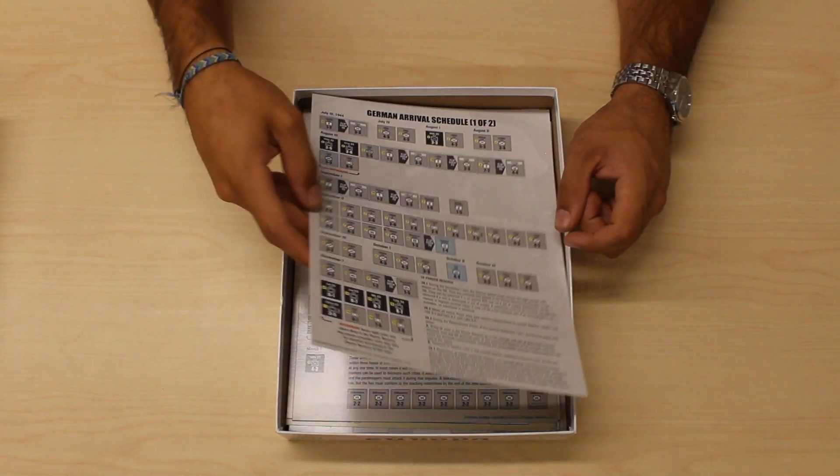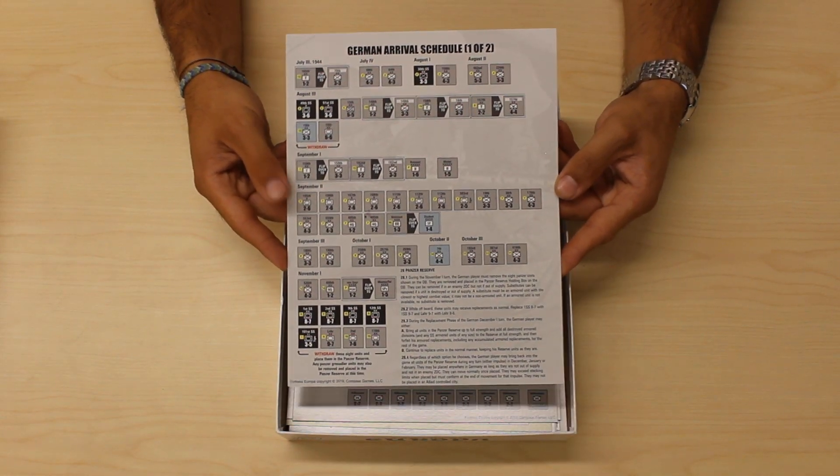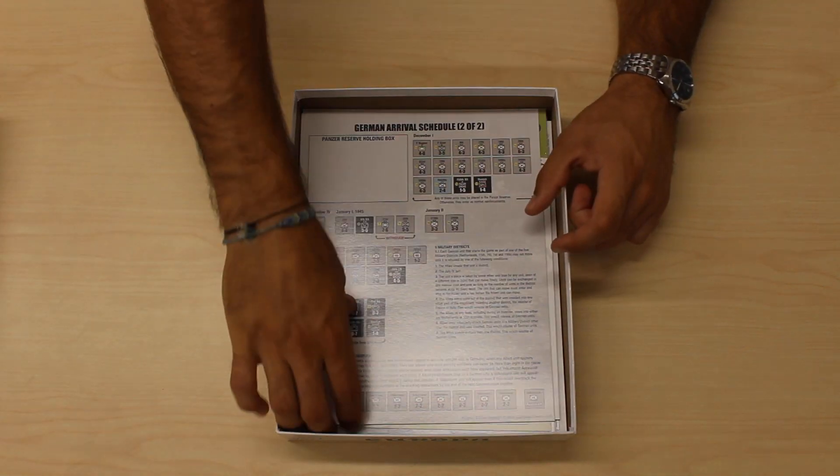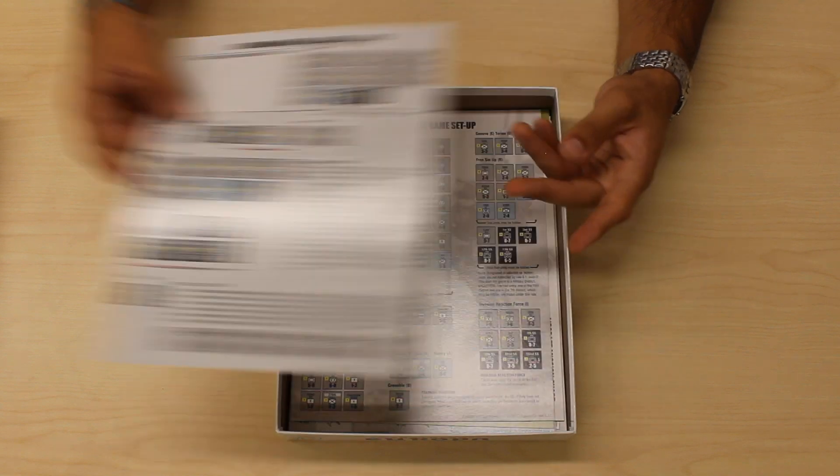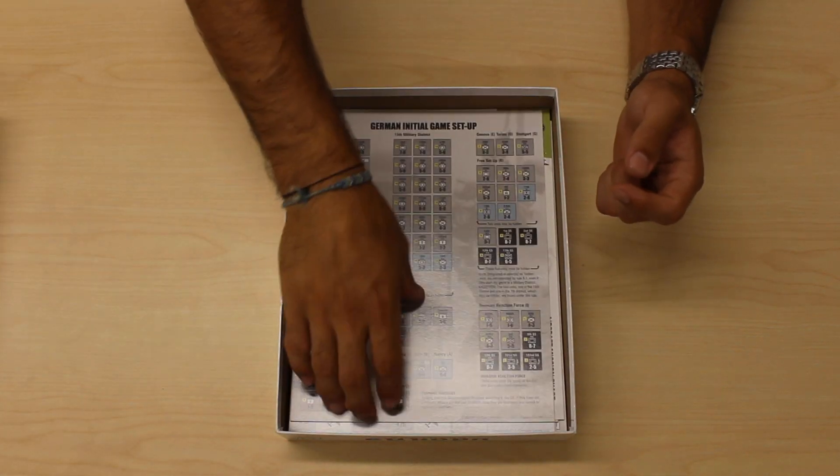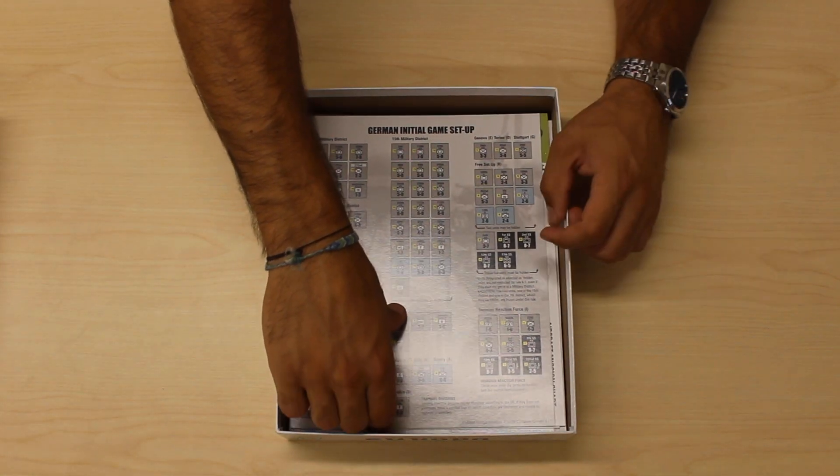Two German Arrival Schedule Displays—this being one of two, here is two of two—and one German Initial Game Setup Display.